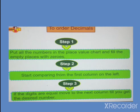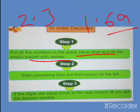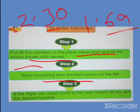तो यहाँ से एक चीज़ clear है। सबसे पहले put all the numbers in the place value chart and fill the empty places with zero — means like में convert करो। Like में कैसे? कोई number जैसे 2.3 है और इसको compare करना है 1.69 से, तो यहाँ two places हैं, यहाँ one है, तो इसके पीछे zero लगा के हम compare कर सकते हैं। Comparison start करेंगे whole number से — जो आपके left side है — फिर one by one वहाँ से start करेंगे, left to right comparison करते आएंगे।